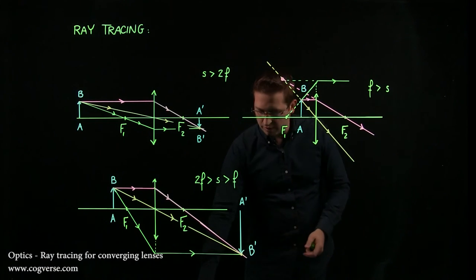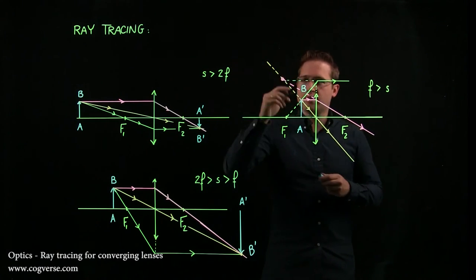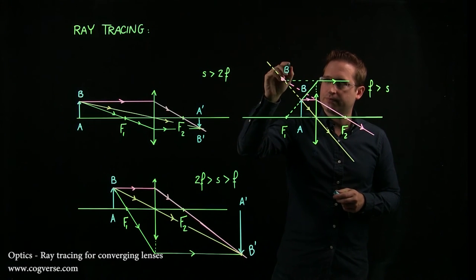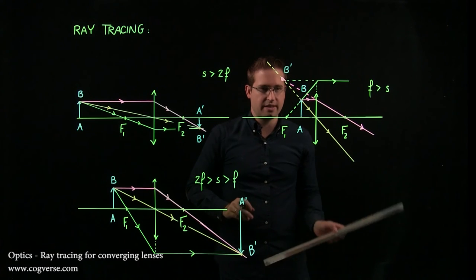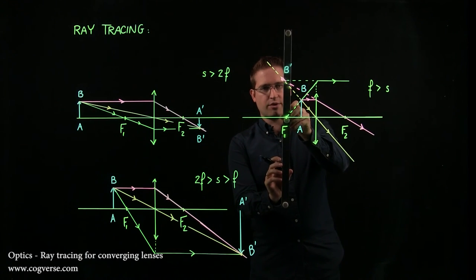And therefore, this is B' and we find point A on the axis just by drawing a vertical line like this.